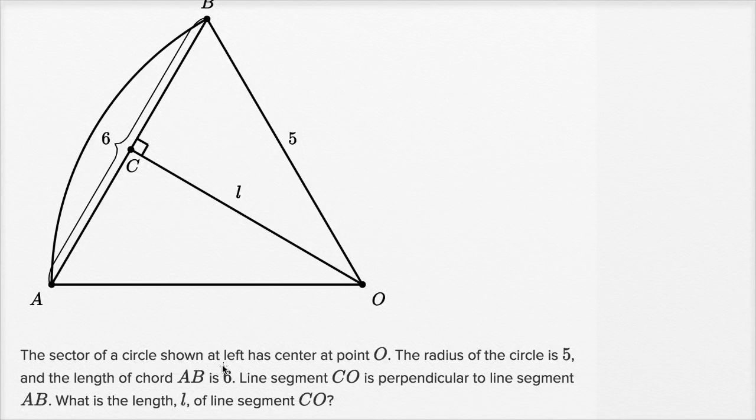The sector of a circle shown at left has center at point O. The radius of the circle is five. So we see we have part of a circle right over here. So we have that arc AB, and you see the radius from the center to any point on that circle.